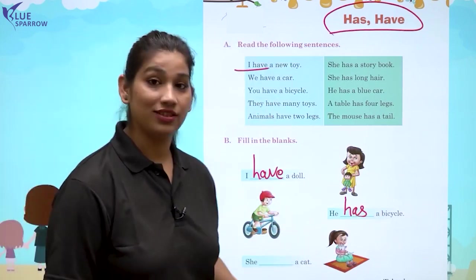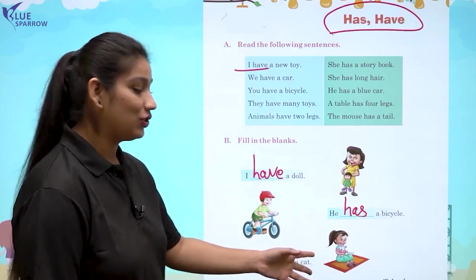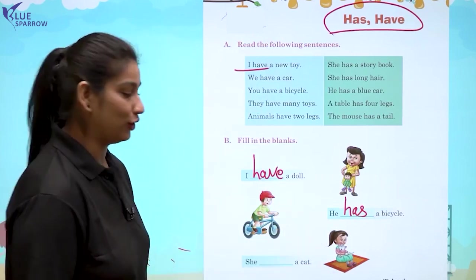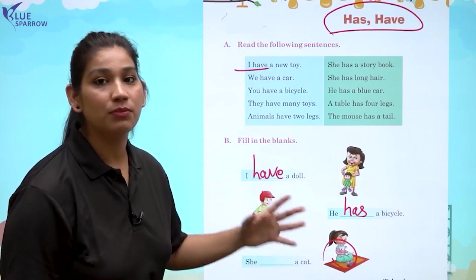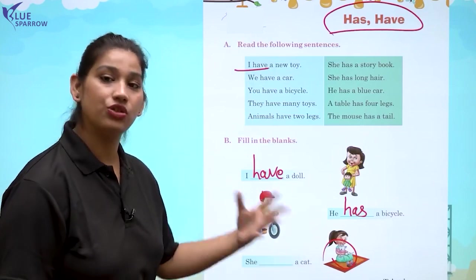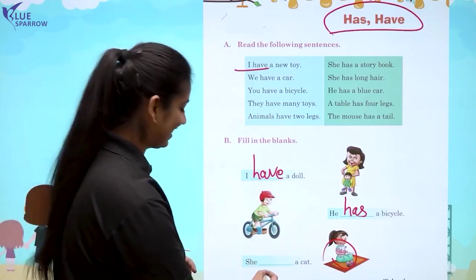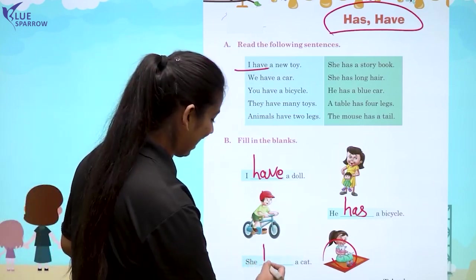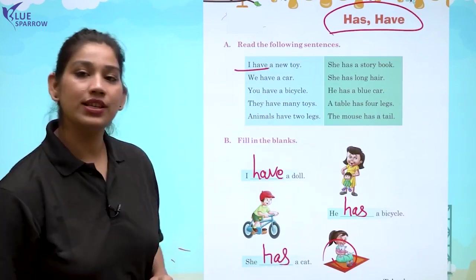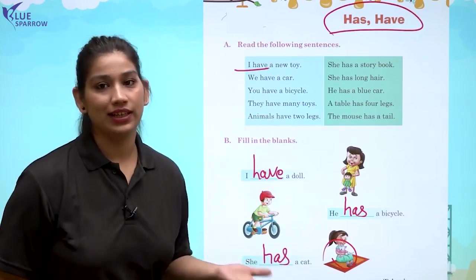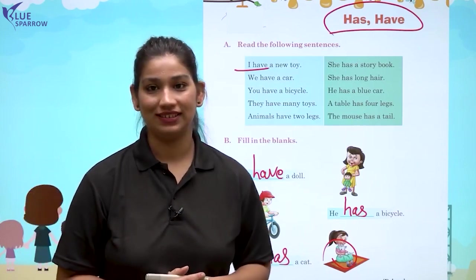She dash a cat — she is a girl here, you can see the cat with her, this is the possession belonging to she. She ke saath hum has lagate hai — she has a cat. So students, I hope you can clearly understand the concept. That's all for today's session.